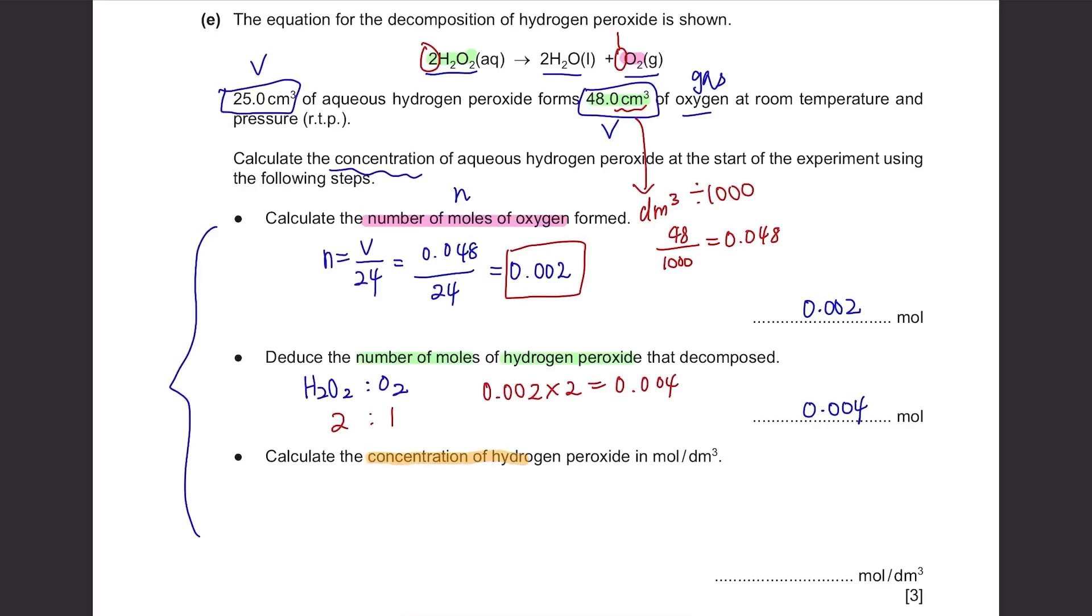Calculate the concentration of hydrogen peroxide in mole per dm³. To find the concentration of a liquid, we need to use this formula: concentration equals number of moles divided by volume. We found the number of moles and the volume is given here, 25 cm³. And again, we never use cm³, we have to convert it to dm³. So 25 divided by 1000 is 0.025. So 0.004 divided by 0.025 equals 0.16 mole per dm³.